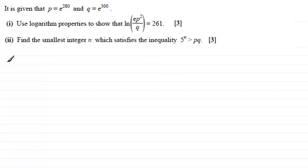So for part one, see how we do it. Well, let's just take our expression here, the natural log of e times p squared, divided by q. Now we've got to show that it equals 261. So let's just break it down first of all. It says use logarithm properties.